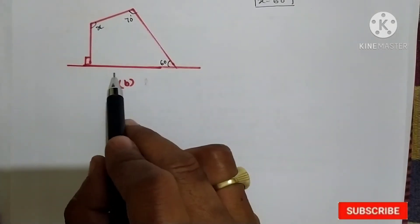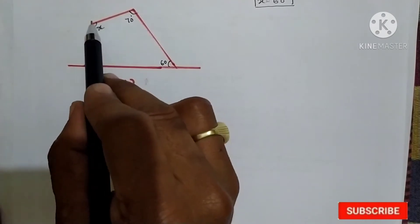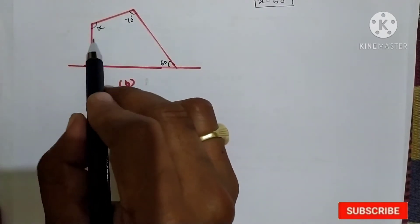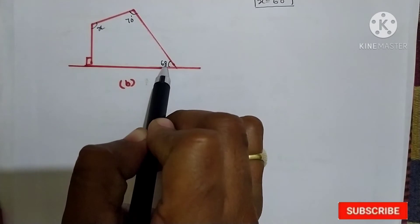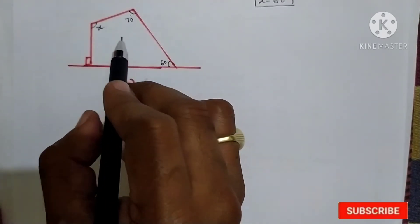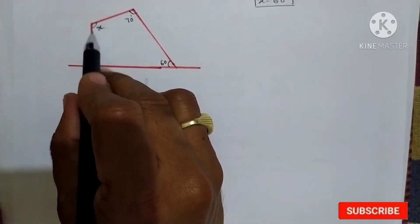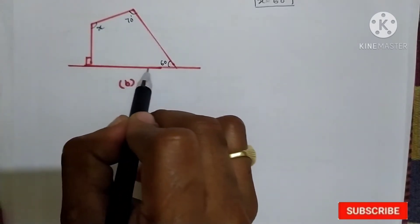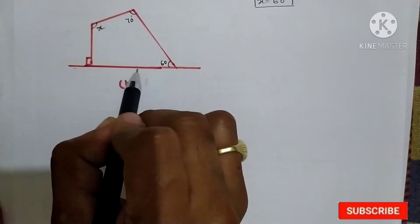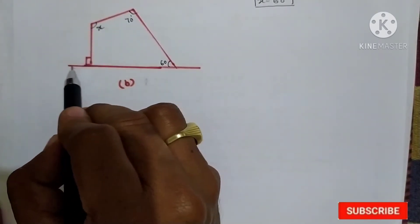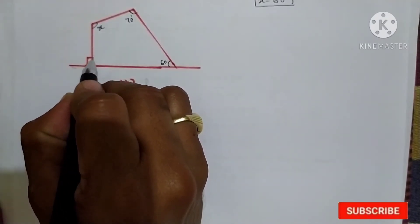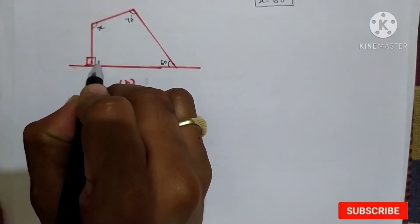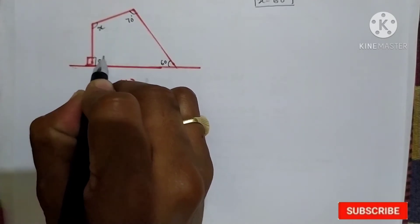Now see in this figure — here x is given, 70 degrees is given, and 60 degrees is given. This line is perpendicular to this horizontal line, and here this line is also perpendicular to this horizontal line. That means this angle becomes 90 degrees — this angle is 90 degrees.